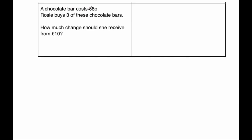Our last question says a chocolate bar costs 68 pence. Rosie buys three of those chocolate bars, so we're going to do 68 multiplied by 3, and that will tell us the total cost. 3 times 8 is 24 — put the 4 down, carry the 2. 3 times 6 is 18, plus 2 is 20. So three chocolate bars would cost 2 pound and 4 pence.